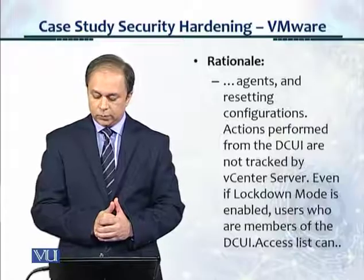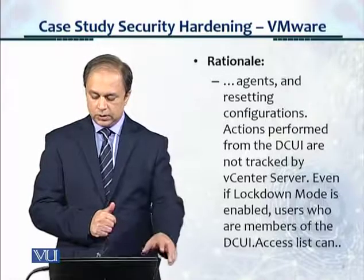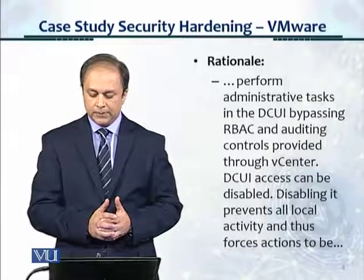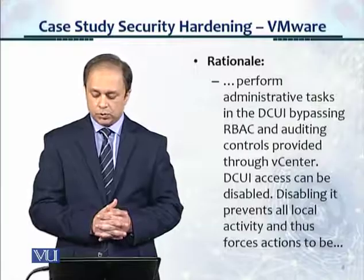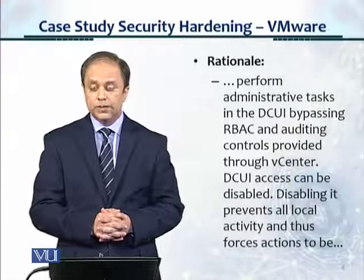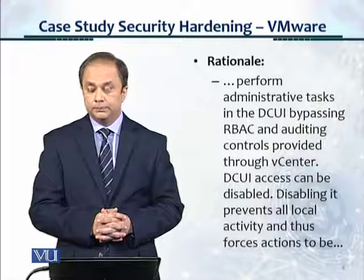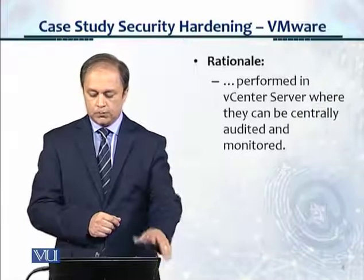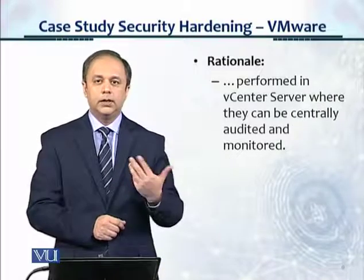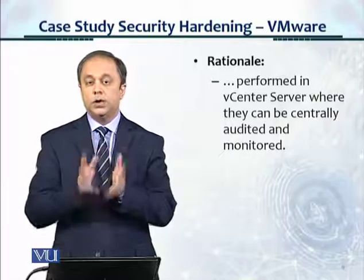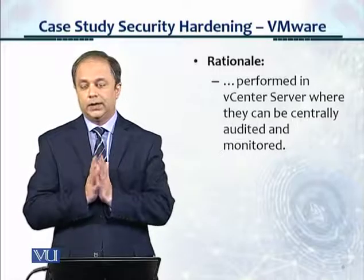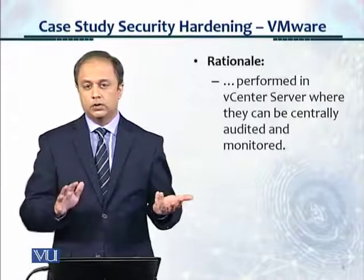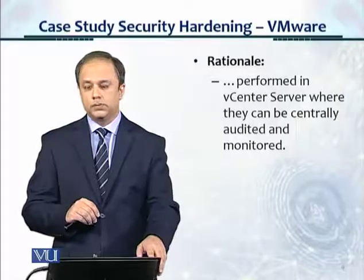Even if lockdown mode is enabled, users who are members of the DC UI access list can perform administrative tasks in the DC UI, bypassing role-based access control or RBAC and auditing controls provided through vCenter. Disabling DC UI prevents all local activity and forces actions to be performed in vCenter, because they're audited and controlled via access control. Going to DC UI on the host bypasses vCenter altogether, which is not good from a security perspective.